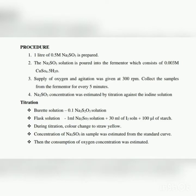Procedure: Step 1 - one liter of 0.5 M sodium sulfite (Na2SO3) solution is prepared. Step 2 - the sodium sulfite solution is poured into the fermenter, which contains 0.003 M copper sulfate and water. Step 3 - oxygen supply and agitation are provided at 300 rpm; samples are collected from the fermenter every five minutes.